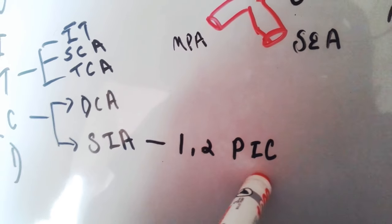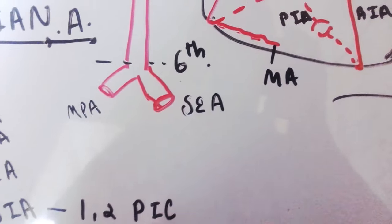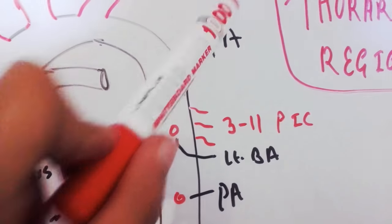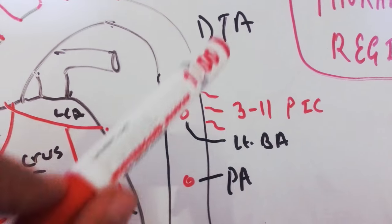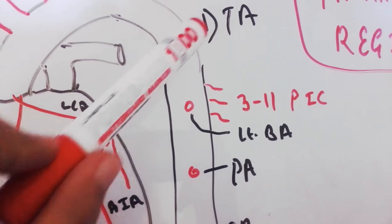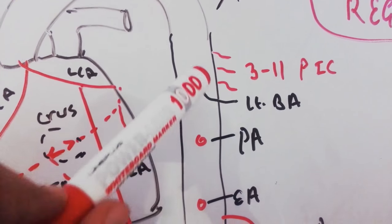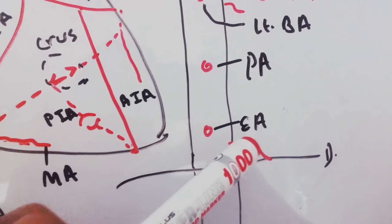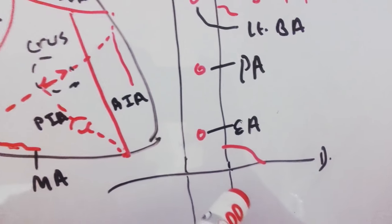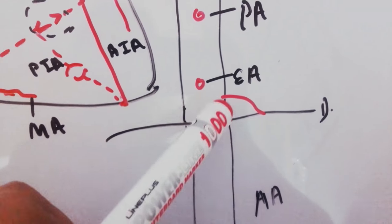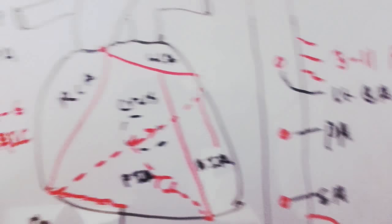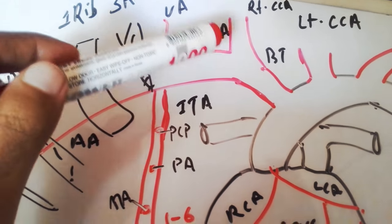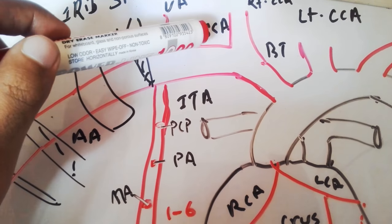The superior intercostal artery gives the first and second posterior intercostal arteries. The other posterior intercostal arteries (3 to 11) are branches of the descending thoracic aorta. The descending thoracic aorta also gives branches like the left bronchial artery, pericardial artery, esophageal artery, and superior phrenic artery. The inferior phrenic artery is a branch of the abdominal aorta.